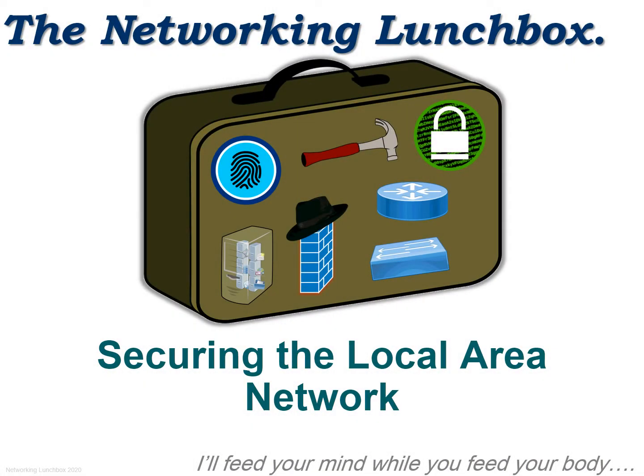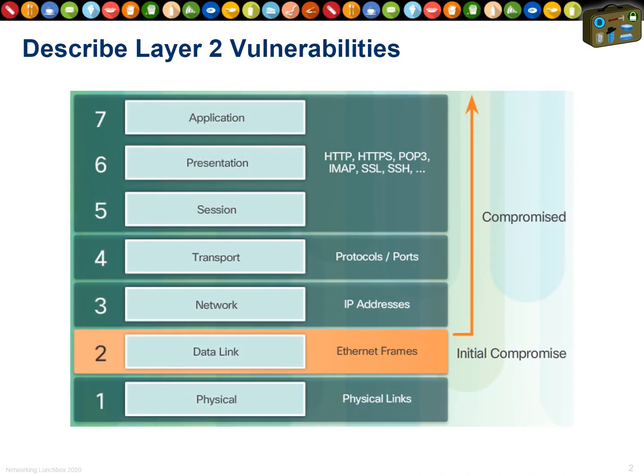Today we're going to be looking at securing the local area network. Think about the seven-layer model. If I can compromise you and your systems at layer two, that's leverage I can get to all the other layers — I can get to your IP, transport, and your applications, all from the ground up.